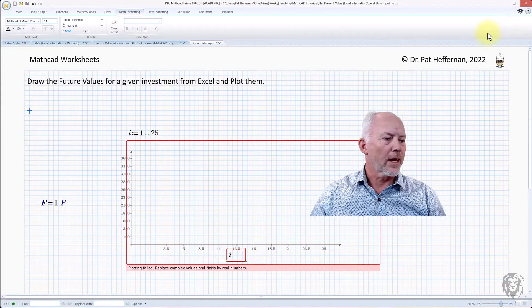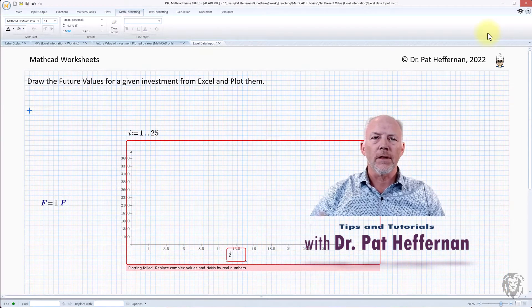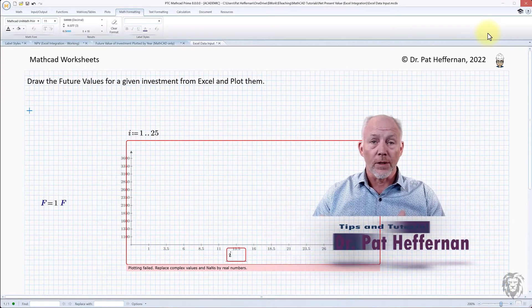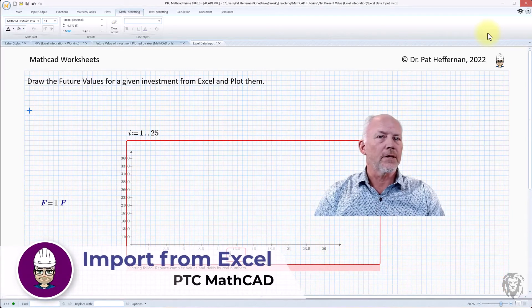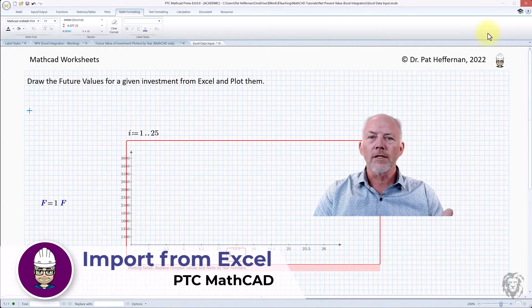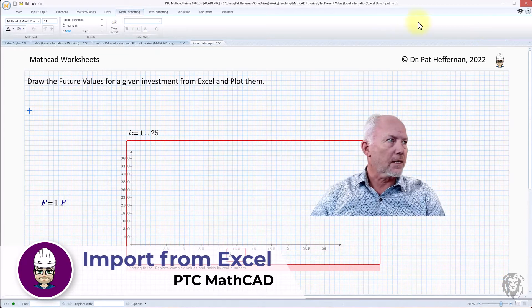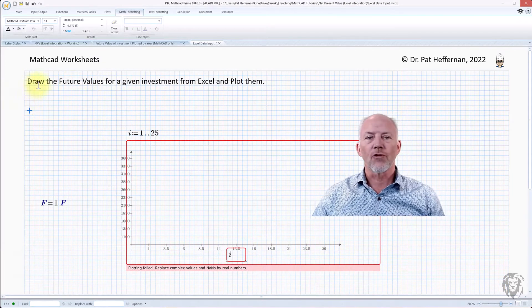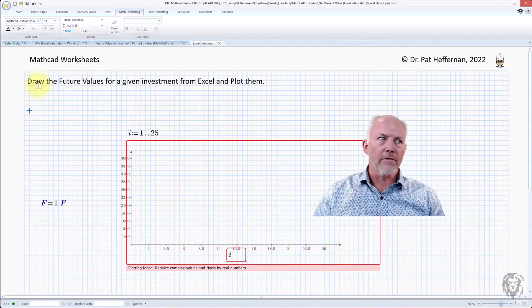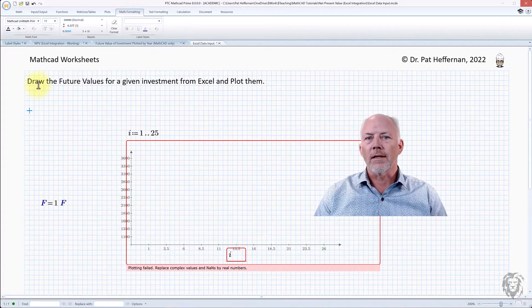Hi, how are you doing this morning? Another little quick one. In keeping with using Excel components, which took a little while to get into some of the capability we can do with Excel components, this is one where I want to show how you can import data from something like Excel. Using more or less the same problem, I'm going to keep it fairly simple. Draw the future values for a given investment from an existing Excel sheet. We're not going to recreate that and then plot them in Mathcad.